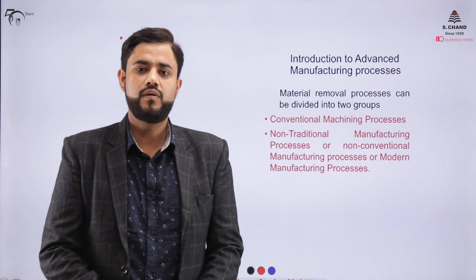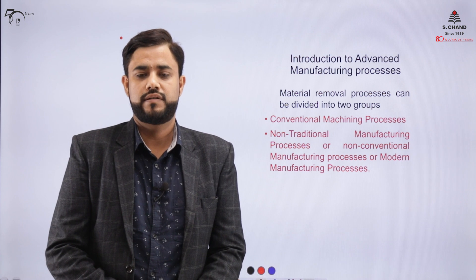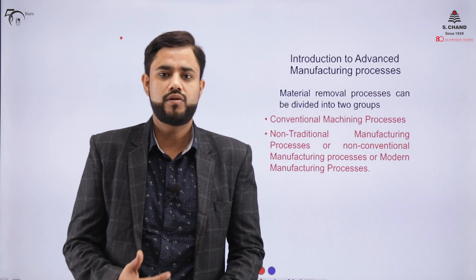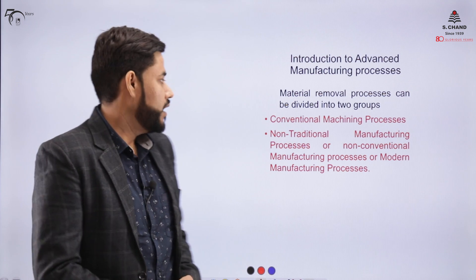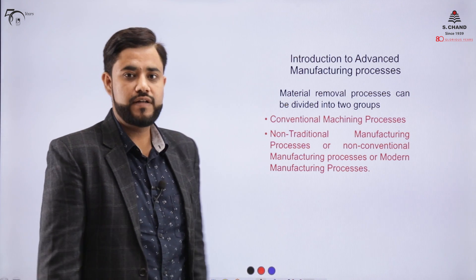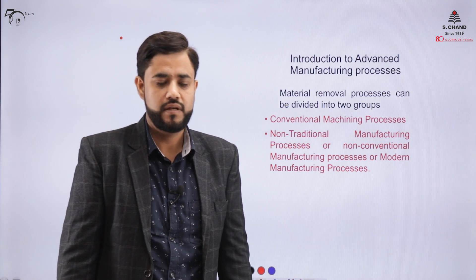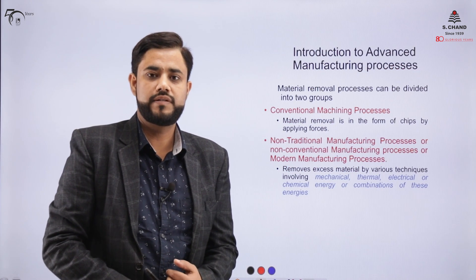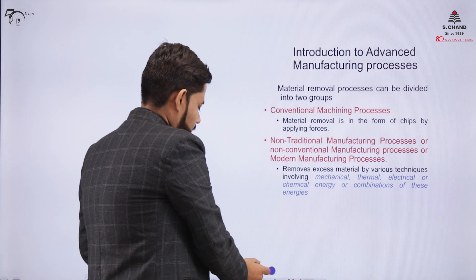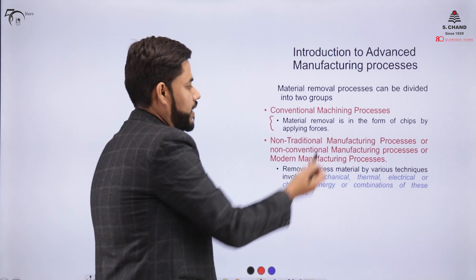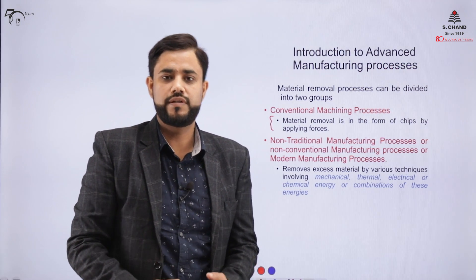Firstly, we'll look at manufacturing processes. We have majorly two categories: conventional manufacturing processes and non-conventional manufacturing processes. Conventional manufacturing process is the category in which metal removal is done in the form of chips, and it is done with the help of forces that we apply.